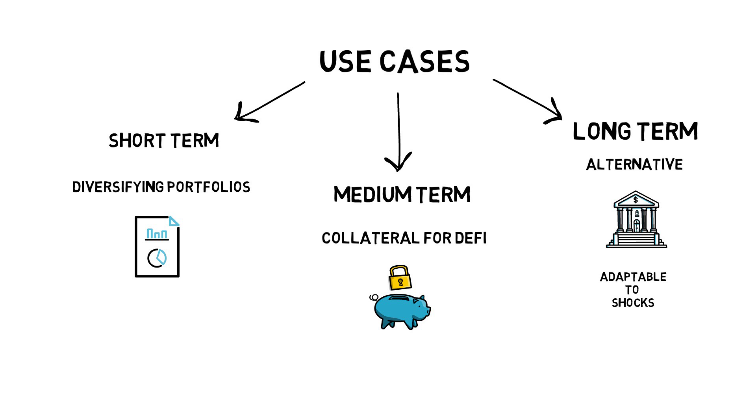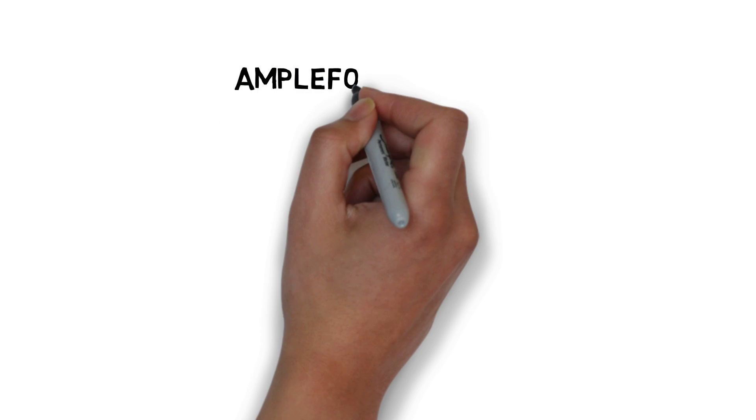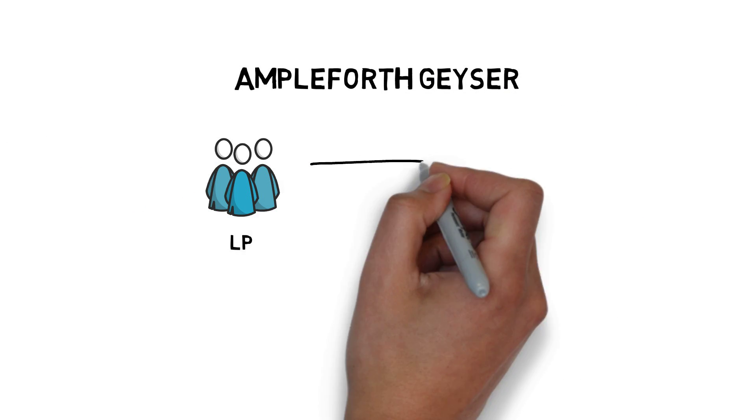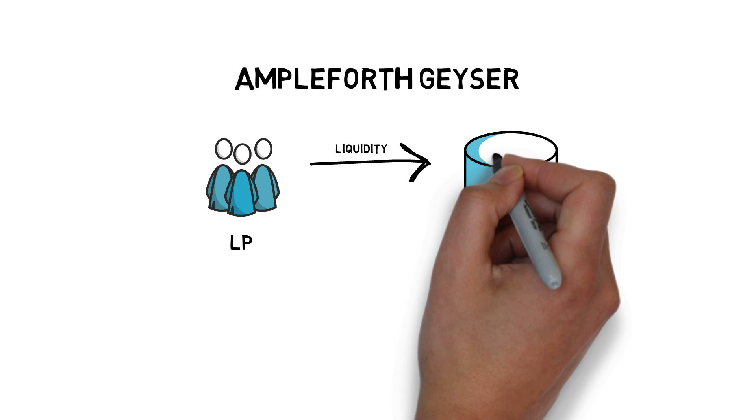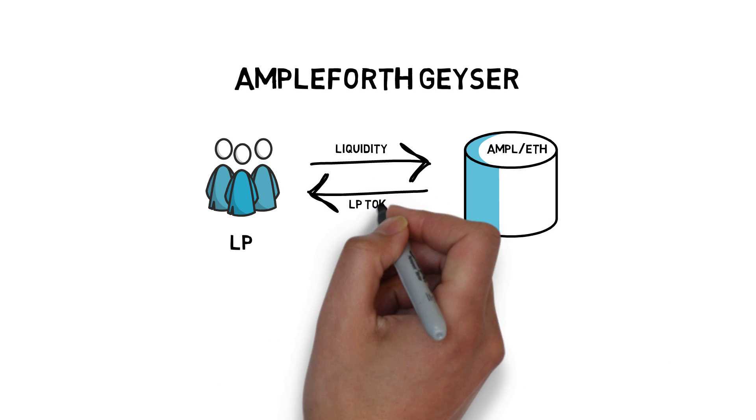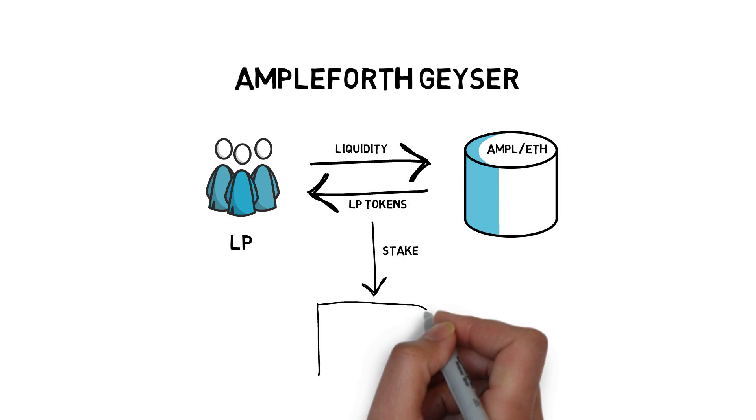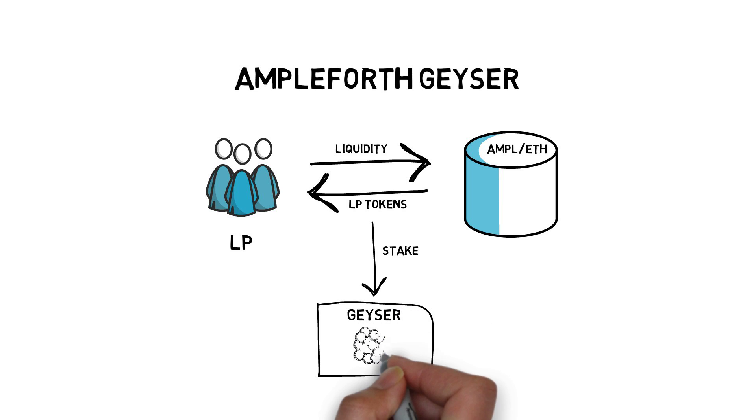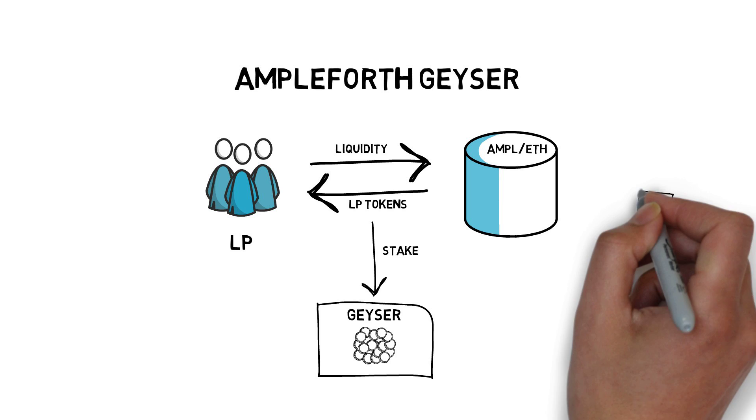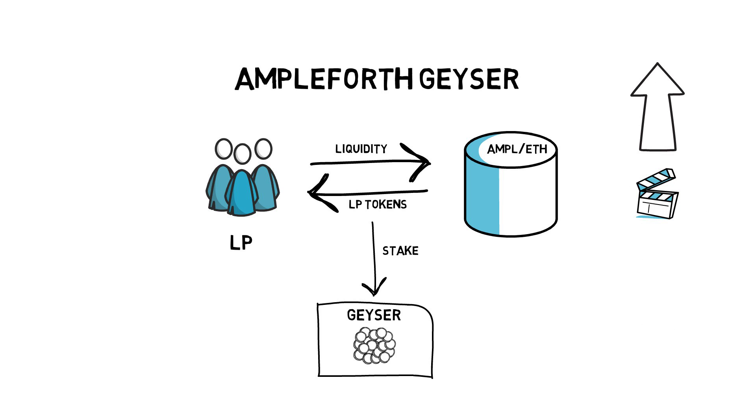To incentivize more on-chain liquidity, Ampleforth created an incentive program called Geyser, where the liquidity providers of the Uniswap Ample ETH pool can stake their LP tokens on Geyser and be rewarded with extra Ample tokens. If you're not sure what it all means, you can check out my video on liquidity pools and the link to the Ampleforth Geyser website in the description box below.